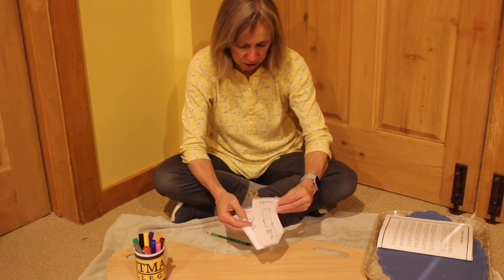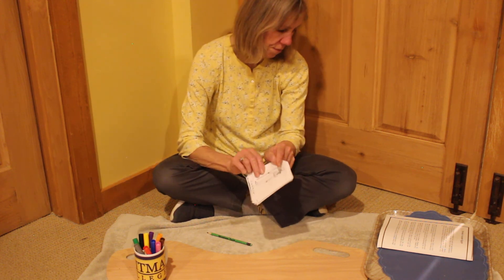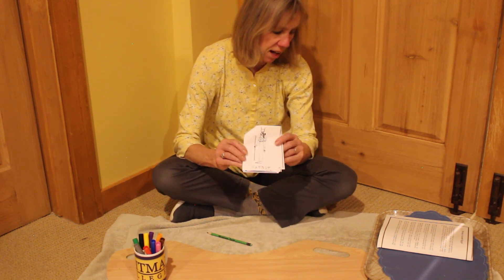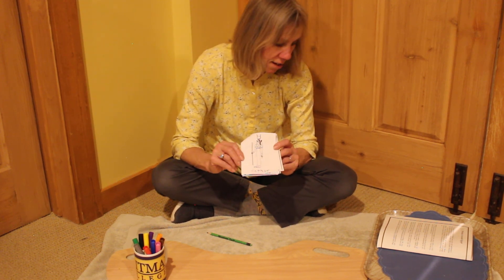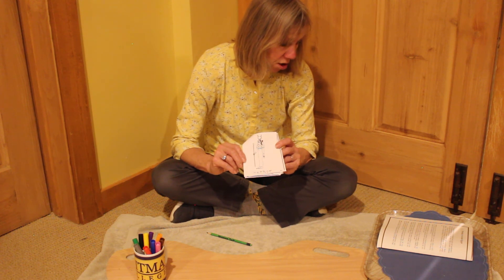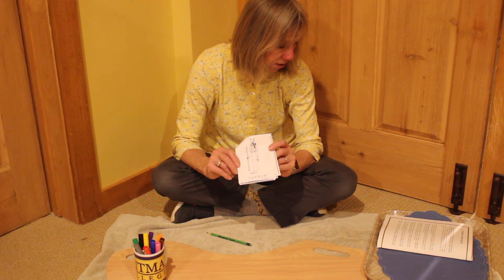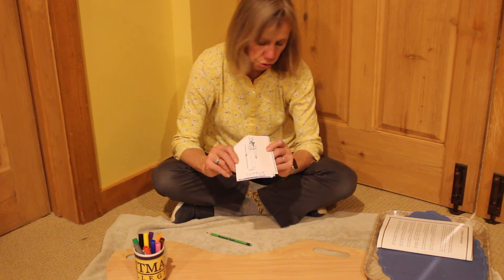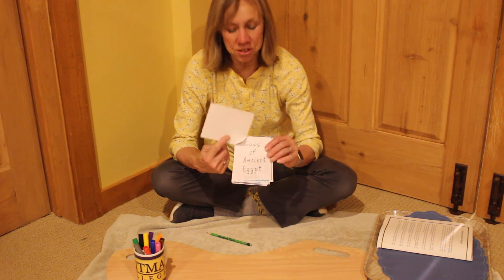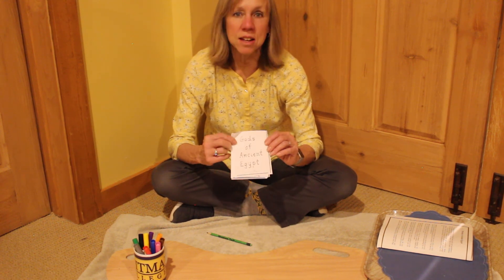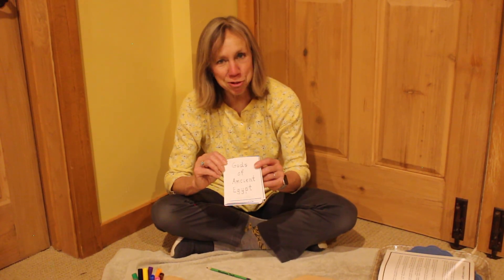Our last deity is Hathor. Hathor was the goddess of the sky and love, music and dancing. She also protected women. She was often pictured as a human with a circle representing the sun between two cow's horns on her head. And those are just some of the many deities that the ancient Egyptians worshipped. Enjoy coloring those.